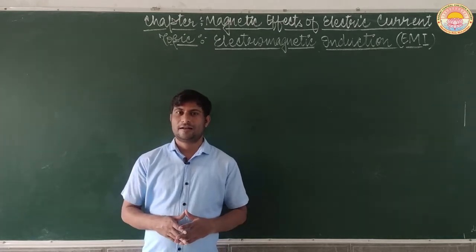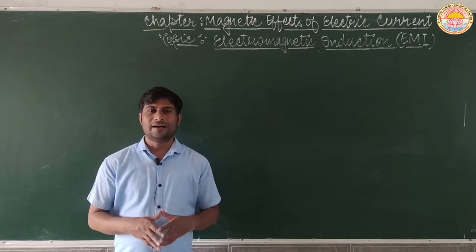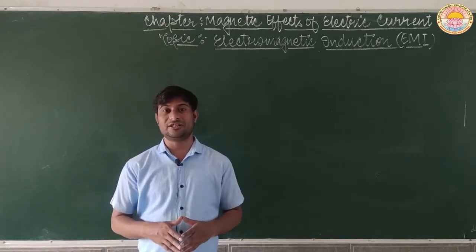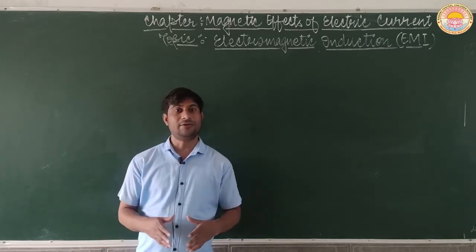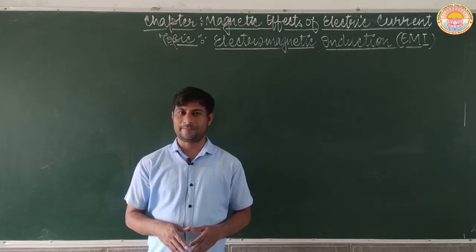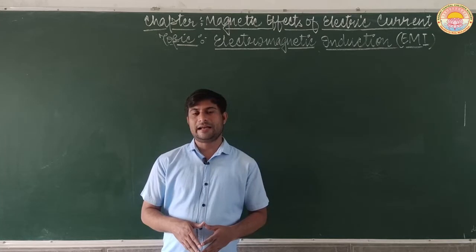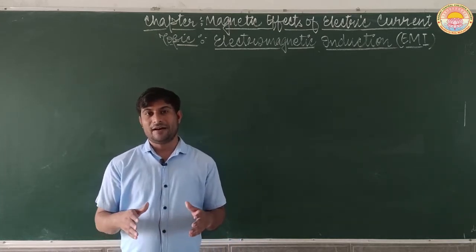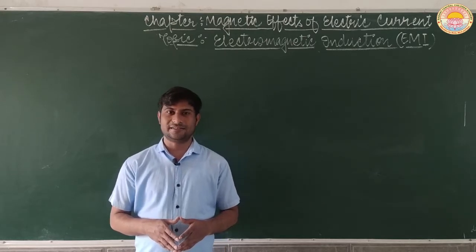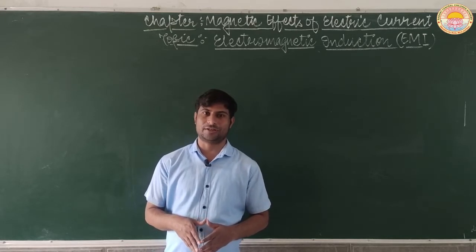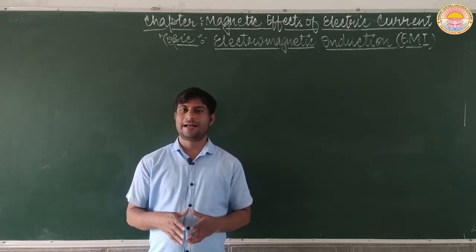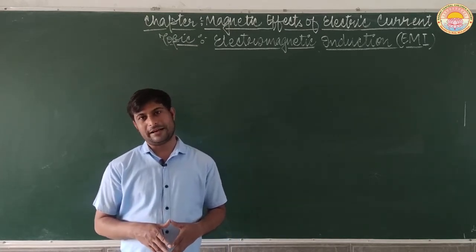Now imagine another situation: when a current-carrying conductor is moving in a strong magnetic field, or a magnetic field is changing around a current-carrying conductor — what happens? This was first studied by English physicist Michael Faraday. In 1831, he made a breakthrough: when a current-carrying conductor moves in a magnetic field, electric current is induced. That is known as electromagnetic induction.